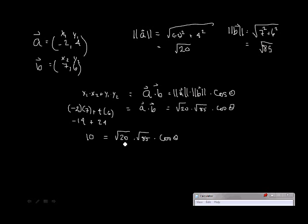Now, let's divide both sides by the square root of 20 and the square root of 85, so that we can get rid of them from the right hand side. Square root of 20, square root of 85. And what we're left with on the right hand side is cosine theta.